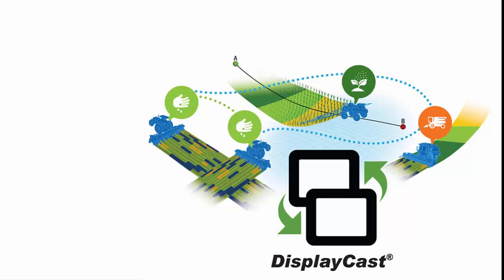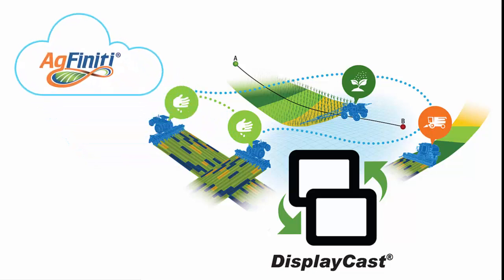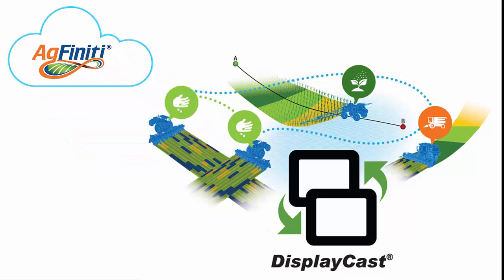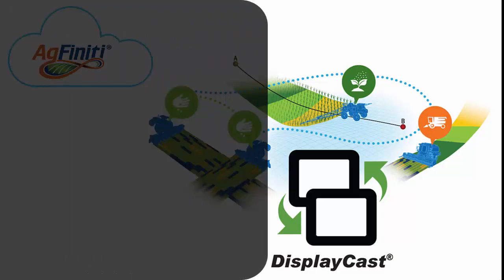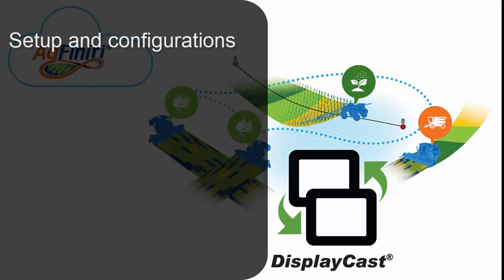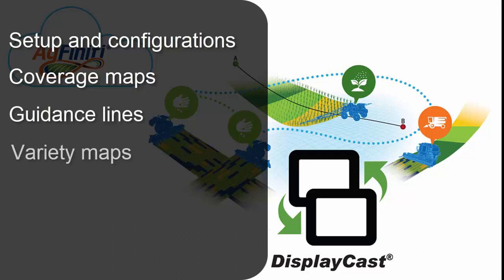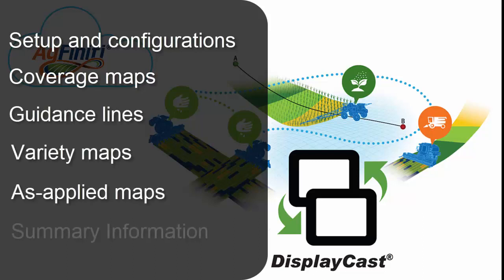Using your InCommand displays coupled with the power of Agfinity, your displays can now communicate with each other to share setup information and configurations, coverage maps for autoswath, guidance lines, variety maps, as-applied maps, and summary information.